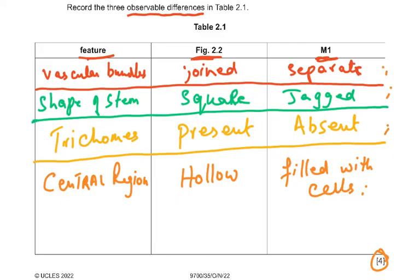If the columns are not given to you in the exam, draw them — that always gets you another mark. Identify the feature you're comparing: vascular bundles, shape of the stem, trichomes, central region, outer margin whether smooth or not. You can come up with anything observable on the slide and on the diagram given to you. The key is that students must read 'observable differences' carefully — you've got to look at the slide and then look at the picture to decide what the observable differences are.